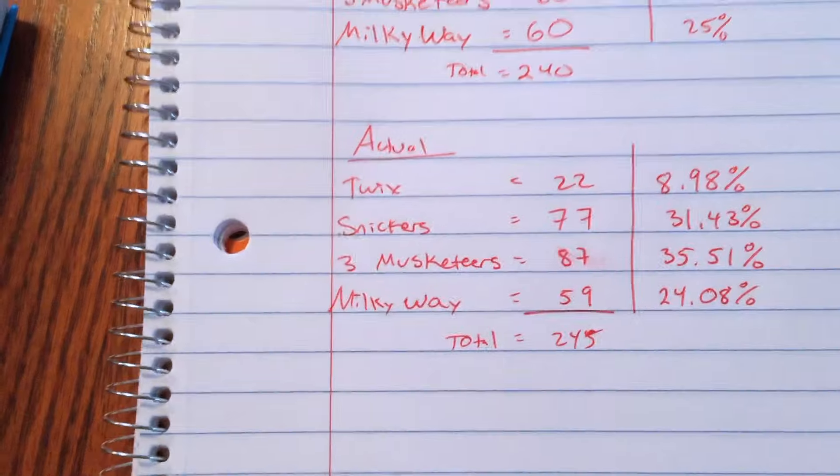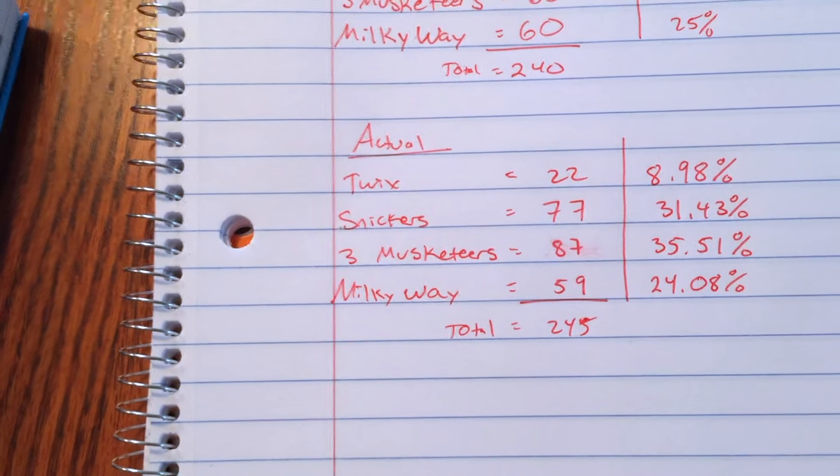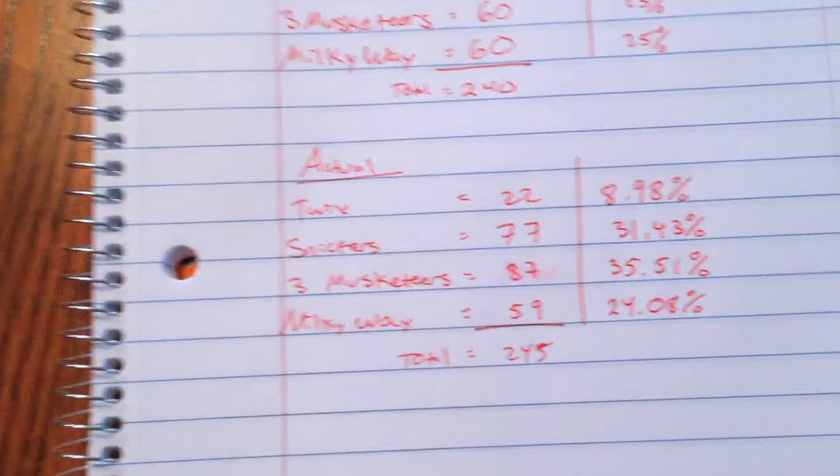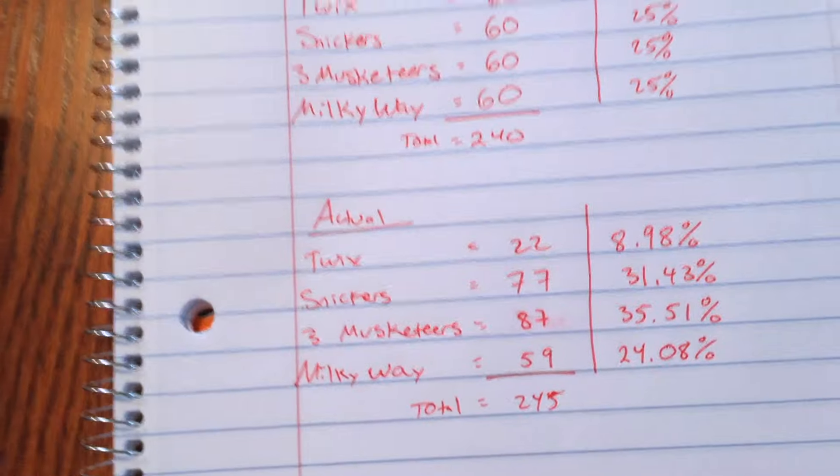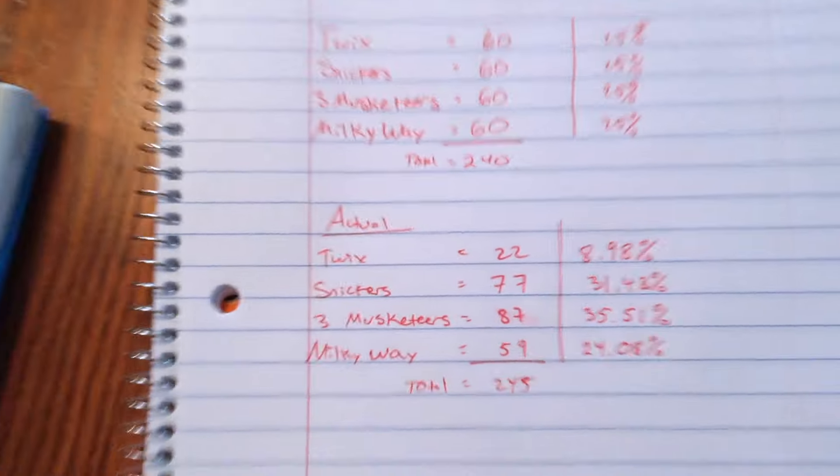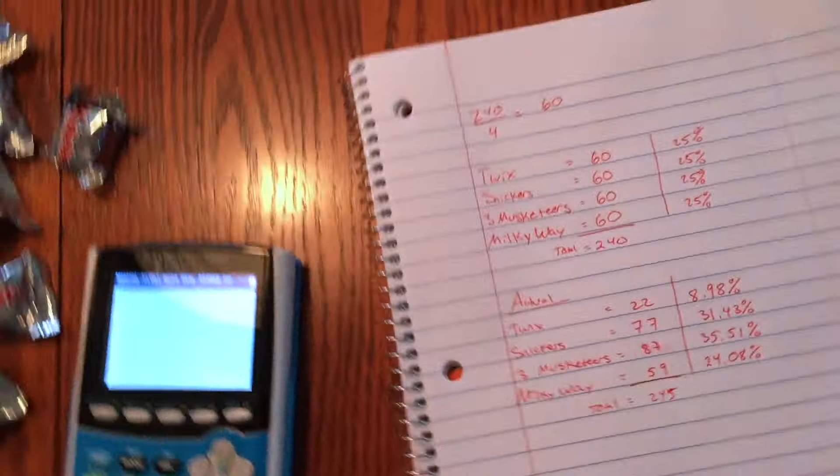They, I guess, added more Snickers and Three Musketeers than Twix. And Milky Way is pretty much right on the dot, maybe one away from what they needed, so I think this doesn't really matter on that.